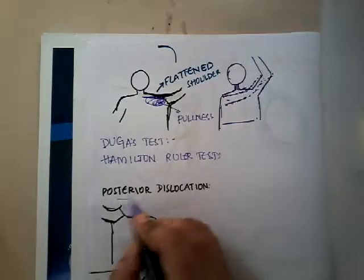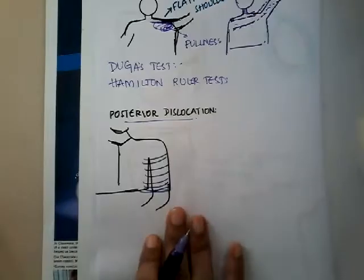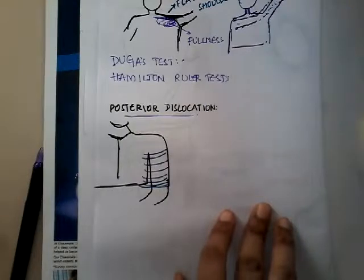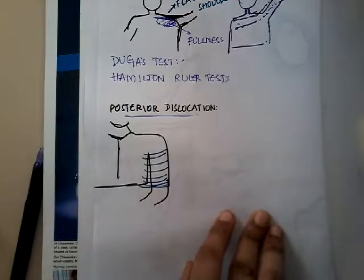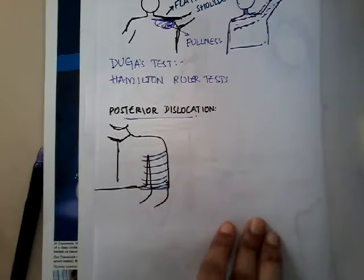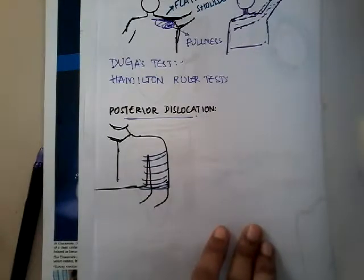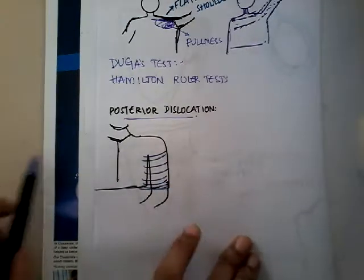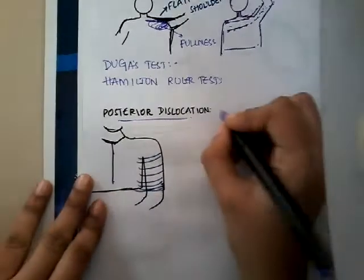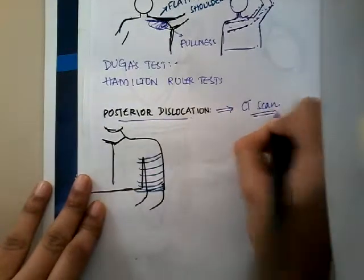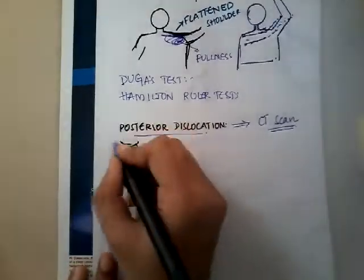For posterior dislocation, it is difficult to diagnose because the bone goes posteriorly, and the dislocation is mostly missed on x-ray. Therefore, x-ray is not diagnostic for posterior dislocation — CT scan is the diagnostic tool of choice.